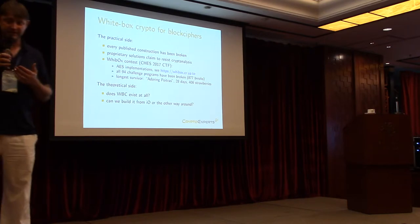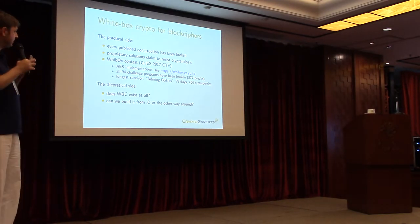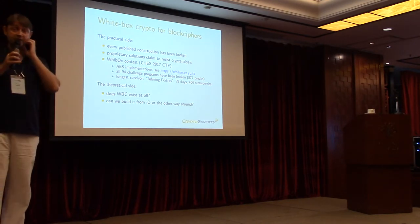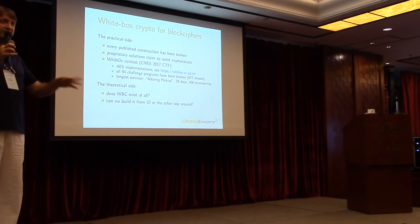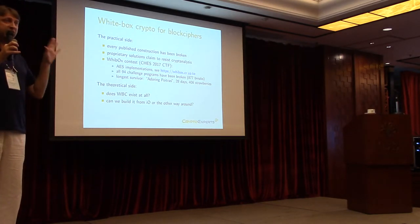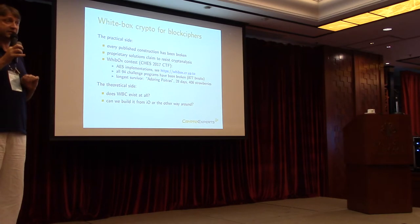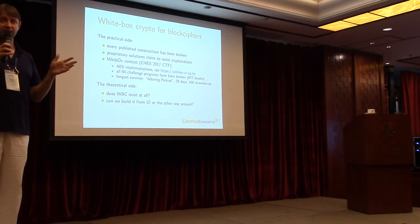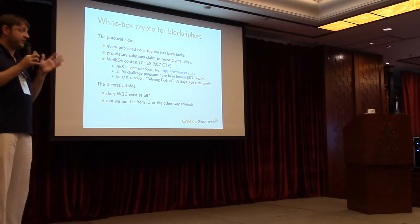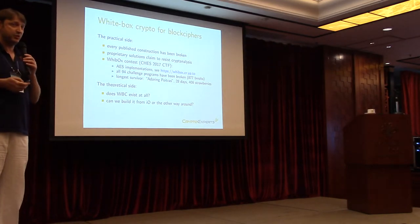On the theoretical side, it's still very unclear. We can define whitebox crypto in theory and define security notions for it, but the big question is existence: can we actually build a construction, even a theoretical one? Can we have even just a single construction of whitebox crypto out of indistinguishability obfuscation, or can we do it the other way around? We don't know that. Apparently there is no obvious connection between the two. To me, it's one of the biggest open questions.